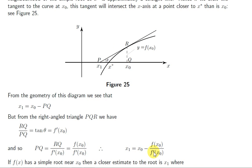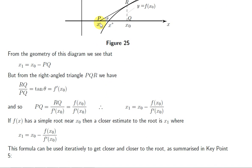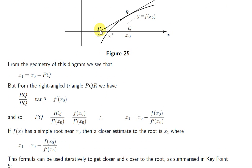In general, x₁ will be closer to x* than x₀ is, provided that this section of the curve is approximately a straight line. We can imagine repeating this procedure: start with x₁ as our new approximation to x*, construct a tangent to the curve at x₁, and see where that tangent hits the x-axis. That point will be even closer to x* than x₁.